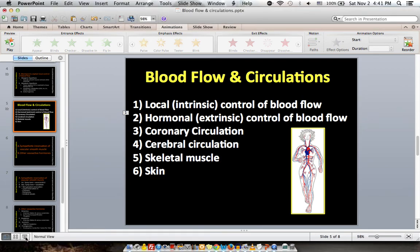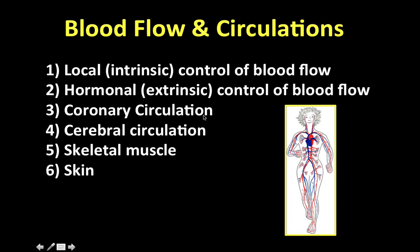In this video we'll continue our discussion of blood flow and circulation, specifically talking about hormonal or extrinsic control of blood flow. In the last video we talked about local intrinsic control of blood flow. A quick review: we covered three examples including autoregulation, active hyperemia, and reactive hyperemia, and also the myogenic hypothesis and the metabolic hypothesis.